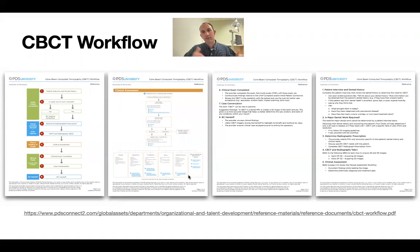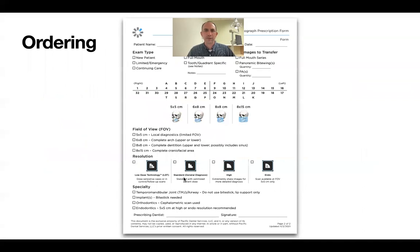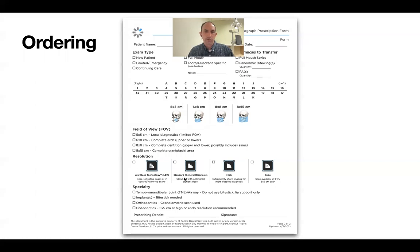How do we order CBCT images? They come in different flavors — there's a size component and a resolution component. This is a referral form we use in our office. Initially for the first two or three months, every patient who came in had one of these attached to their clipboard along with their route slip and specialty referral form. The doctor would fill it out after the meet-and-greet when the assistant asked what kind of x-rays they wanted.